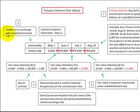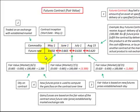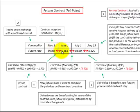In summary, futures contracts are traded on an exchange with an established market, and their fair value is based on new future prices established each day. To determine any gain or loss on the contract, you compare the future rates between periods, starting with the contract inception date. Any gain or loss is determined based on whether you're buying or selling the contract, and those gains or losses represent the fair value change for each period.